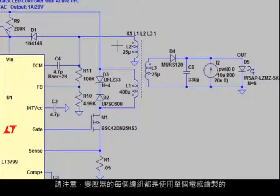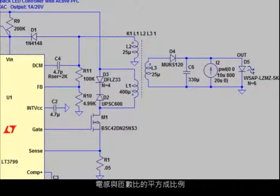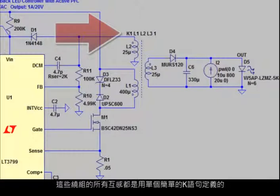Notice that each winding of the transformer is drawn using an individual inductor, where the inductance is proportional to the square of the turns ratio, and that all the mutual inductances for these windings are all defined using a single, simple K statement.